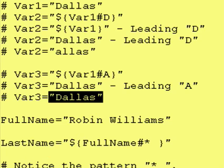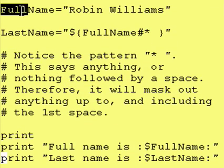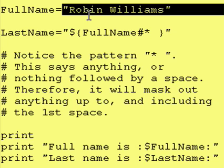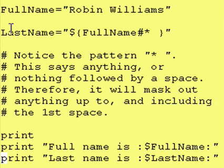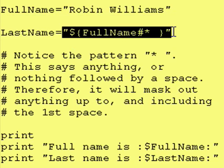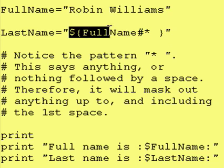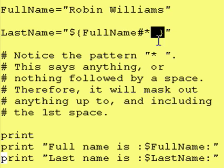Now let's look at a more practical example. Say we have a variable called fullname, and fullname contains 'robin williams'. Our next line says we have a variable called lastname, and we are going to assign to it: dollar sign, curly brace, fullname, pound, asterisk, space — and this space is very important — close curly brace.